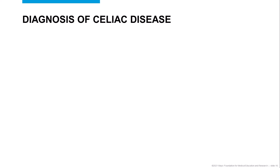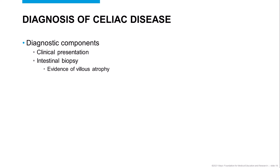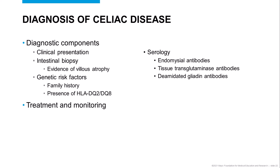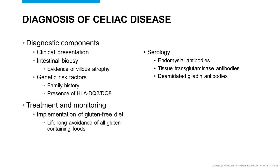The diagnosis of celiac disease can be based on a review of clinical symptoms and coexisting conditions, and intestinal biopsy with evidence of villus atrophy, serology testing for endomesial, tissue transglutaminase, and deamidated gliadin antibodies, and evaluation for genetic risk factors, including family history and presence of HLA-DQ2 and DQ8 alleles. Treatment for celiac disease is implementation of a gluten-free diet, with the goal of removing the environmental exposure of dietary gluten.